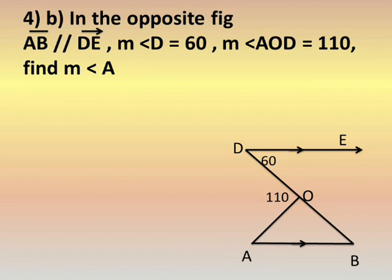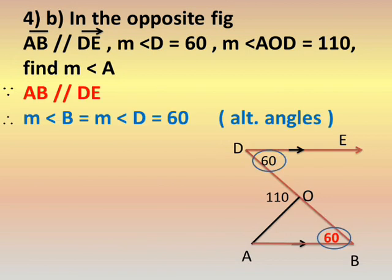Number four B: AB is parallel to DE. Measure of angle D equals 60, measure of angle AOD equals 110. Find measure of angle A. Since AB is parallel to DE, there is a Z-shape (alternate angles). Angle D equals 60 degrees and angle B — the two are alternate angles — so angle B also equals 60 degrees.